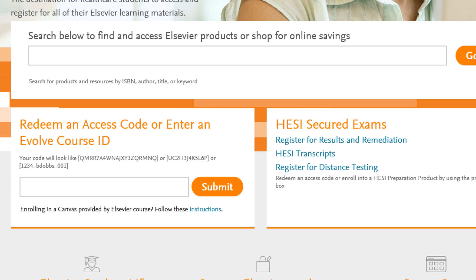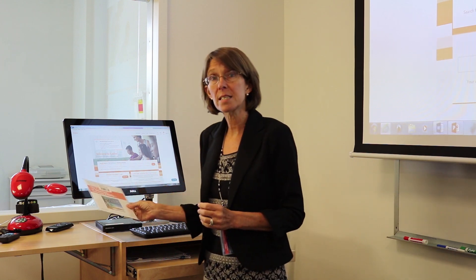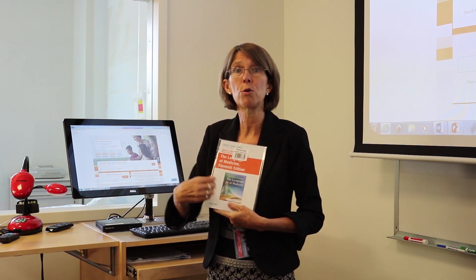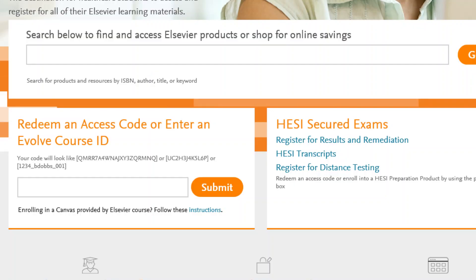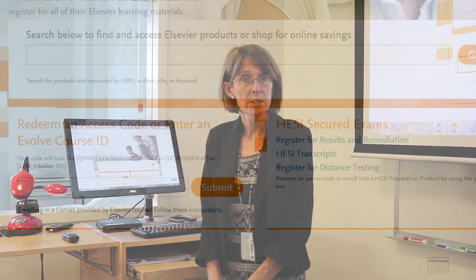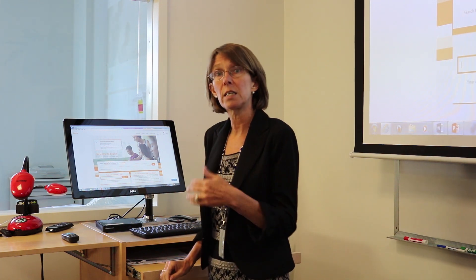Here's where we'll redeem your access code. Open the package and inside there will be a silver strip that you'll rub off, and there will be an access code underneath. Type the access code in the area where it says to redeem an access code, then click Submit. It will then ask you to fill in your student name, the date of your graduation, the name of your school, etc. Some of those fields are required, so complete them as appropriate, then click Redeem.